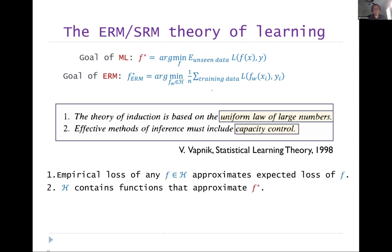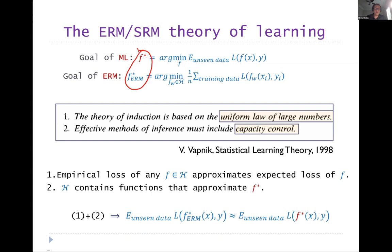The uniform law of large numbers simply means that the empirical loss of any f in H approximates the expected loss of f — uniformly over the function class H. Capacity control means that H contains functions that approximate f*. If H doesn't contain functions approximating f*, there is no hope. With both conditions, you can connect f*_ERM to f*, meaning your algorithm's performance is essentially the same as the optimal.